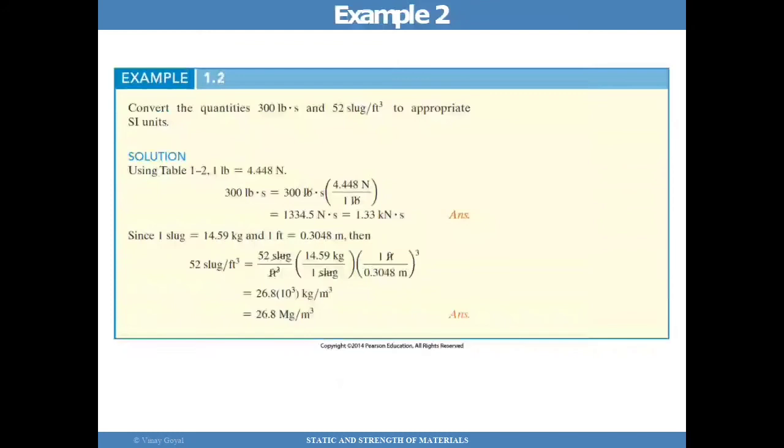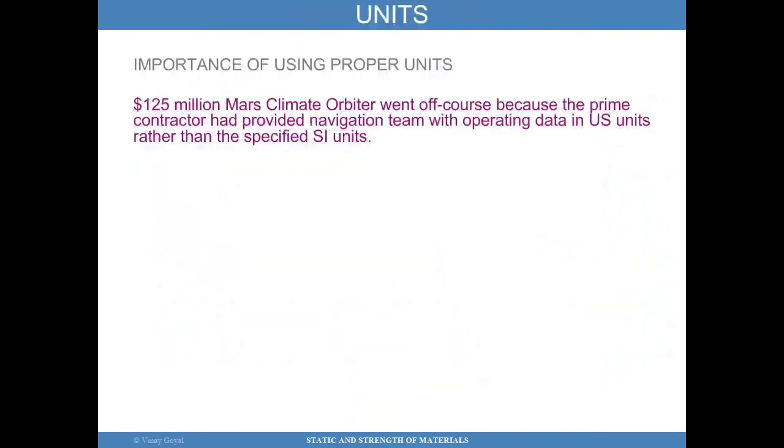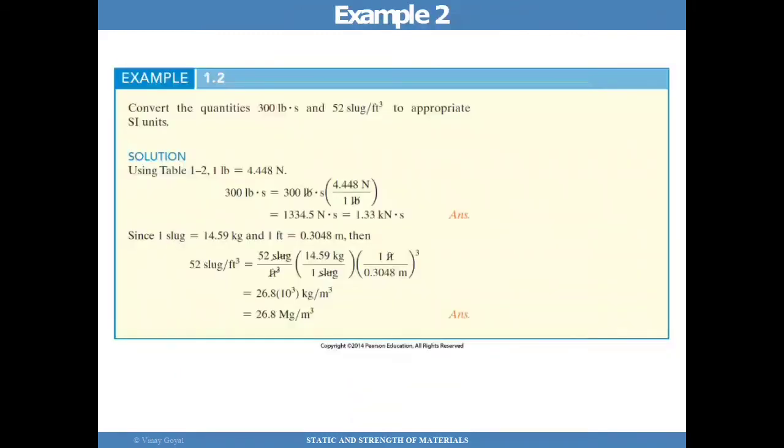So now I'll convert the quantities in this second example, 300 pound time second and 52 slugs per feet cubed to the appropriate SI units. Remember, these are U.S. customary units. So to convert it, I want to first understand what is the right unit in SI. The right unit in SI for pound is newton. And so all I need to really convert then is 1 pound to newton. And so here I have 1 pound equals 4.448 newton. And you can find that from tables like this, as an example. And once you have that, you can see that force, that 1 pound is 4.448 newton.